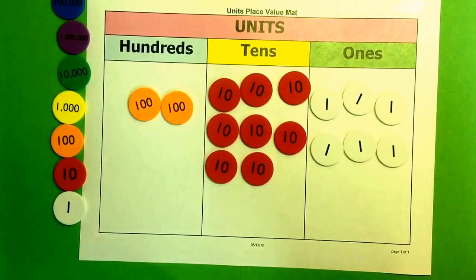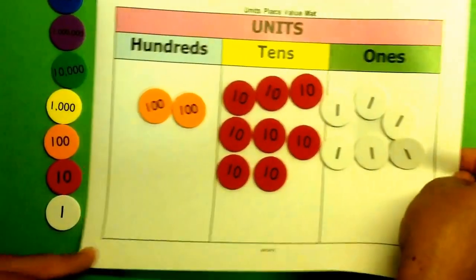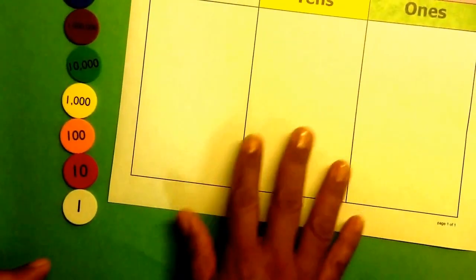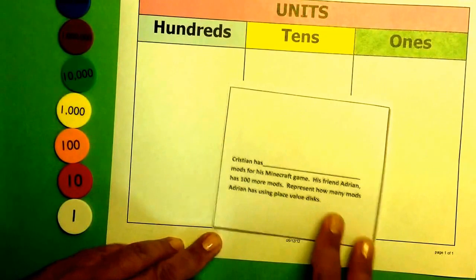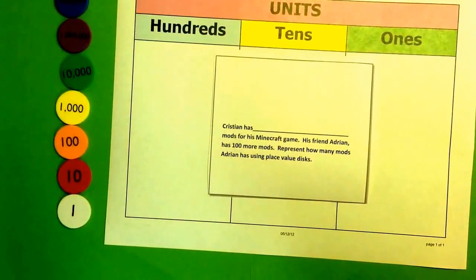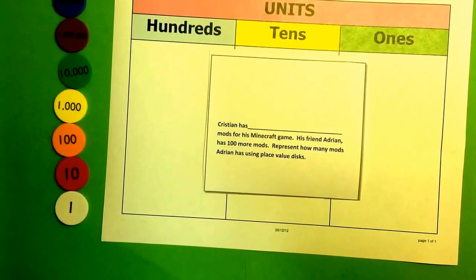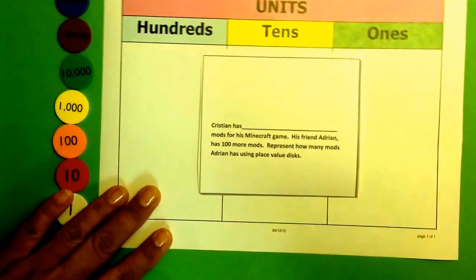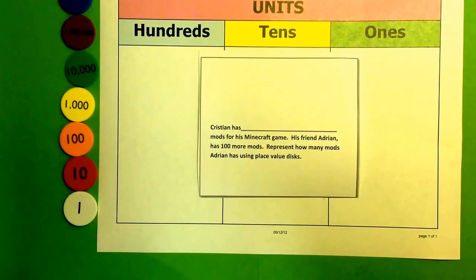Here's a little variation on the use of place value disks. It's the same problem, but I've changed it a little bit. It says, Christian has blank mods for his Minecraft game. His friend Adrian has 100 more mods. Represent how many mods Adrian has using place value disks.